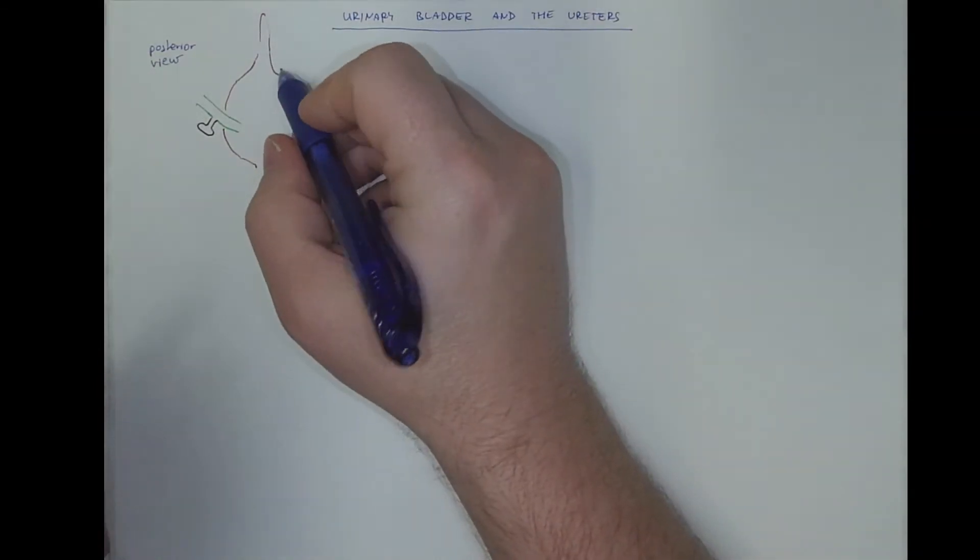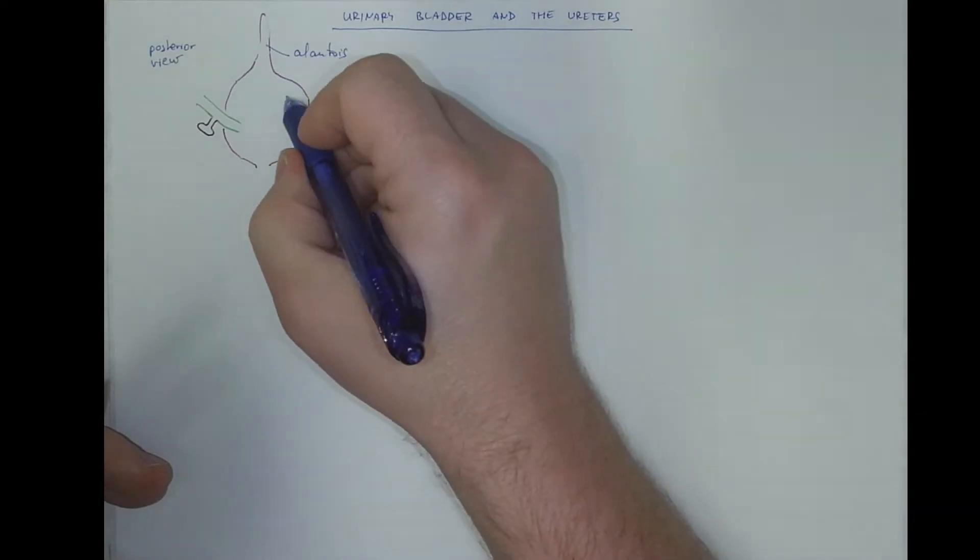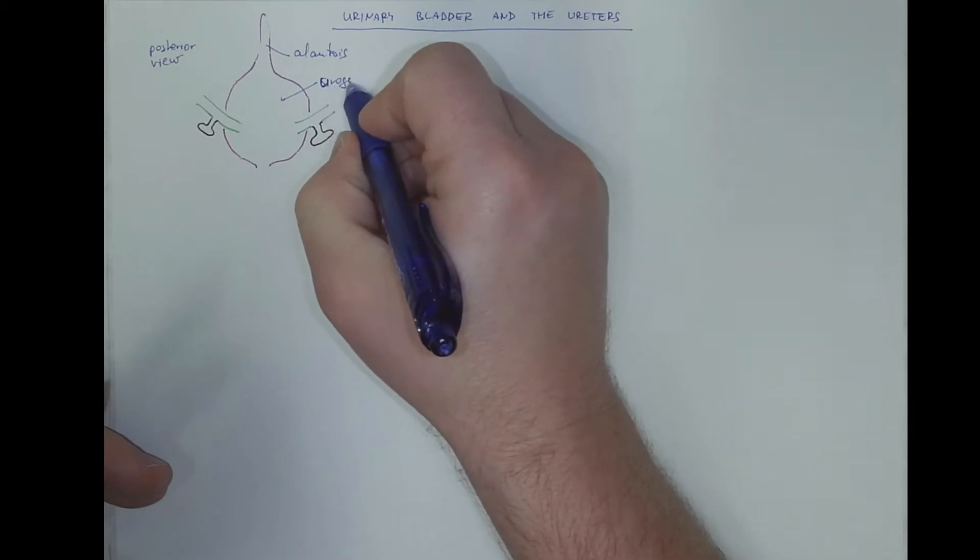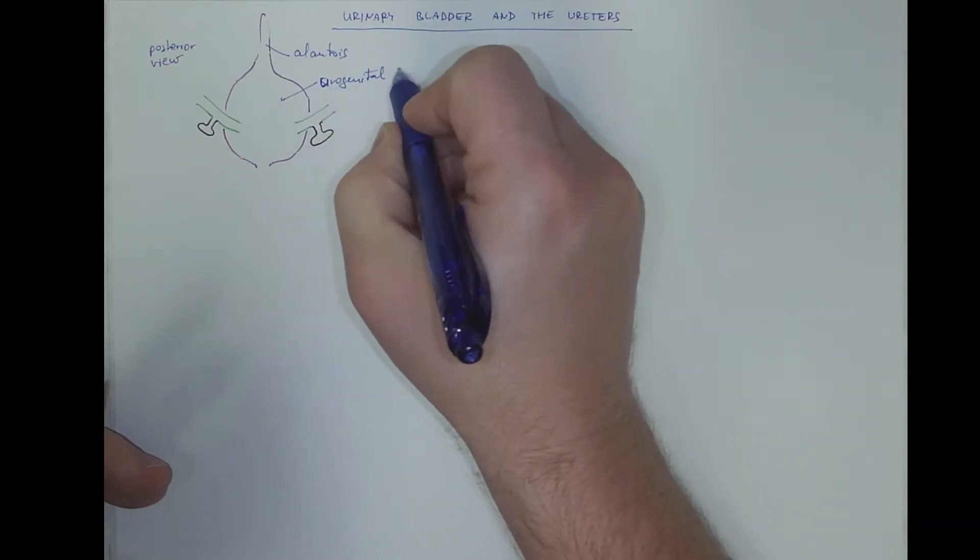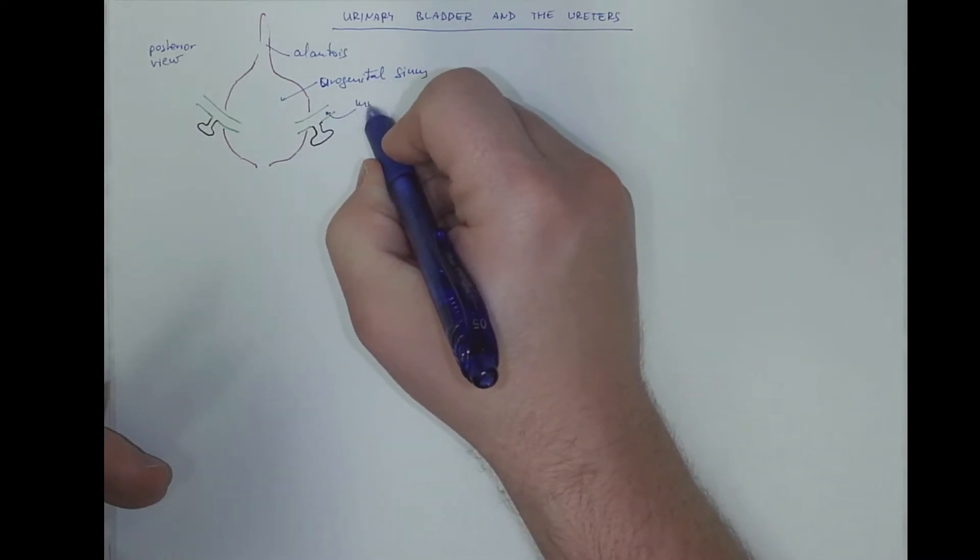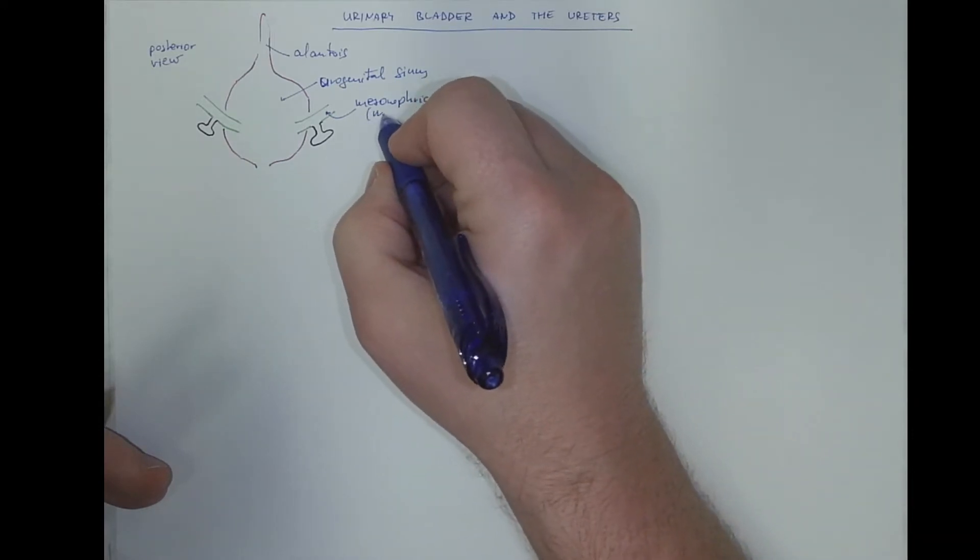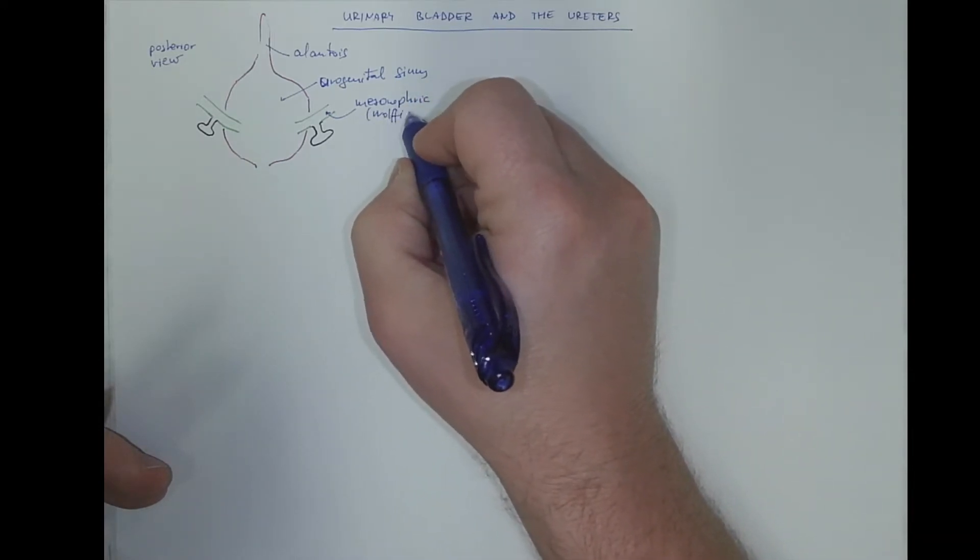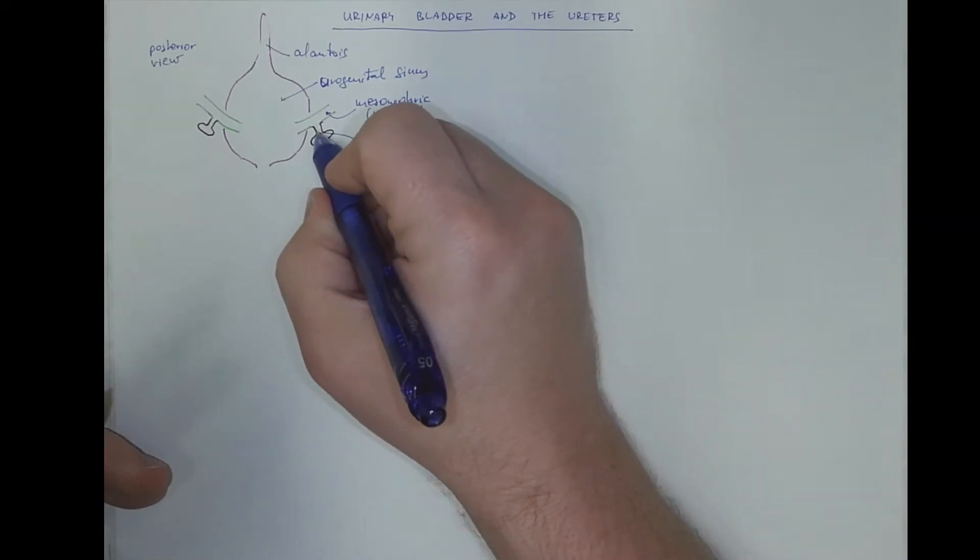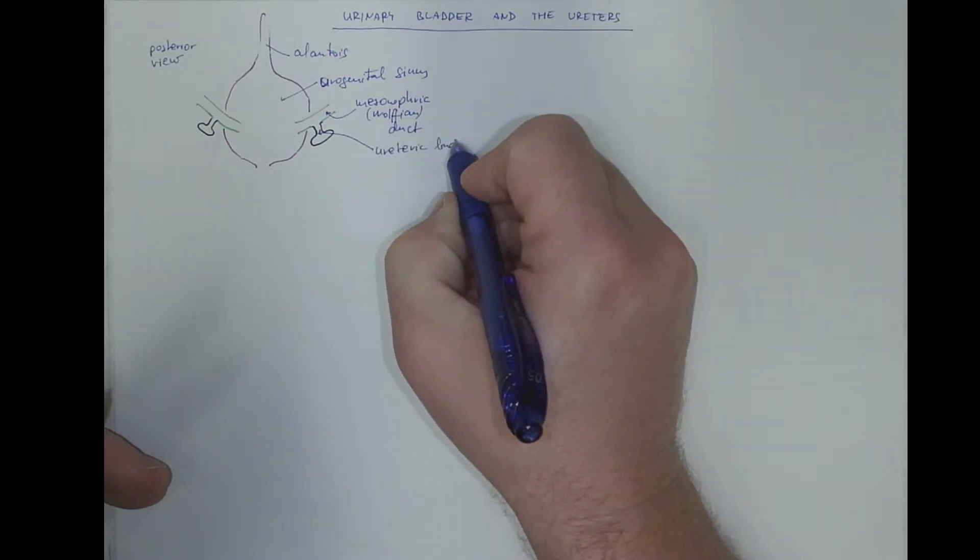So this is the allantois, that's the urogenital sinus, receiving the mesonephric duct or Wolffian duct which has this ureteric bud as a side branch.